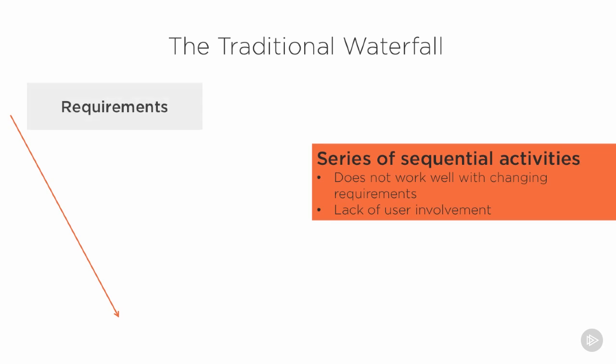The first step is to determine the requirements: what are the requirements of this system, what is the objective, and what are we going to deliver in the end? It is only once we've understood the requirements that we can work on the design — a design that will actually meet those requirements. We take each requirement and map it out into the design, showing how each requirement will be satisfied by the final design.